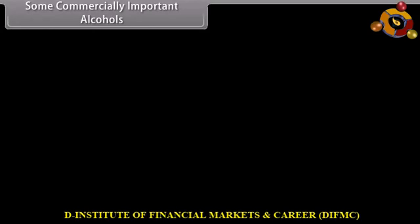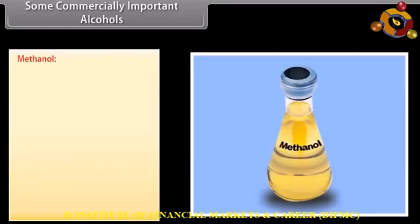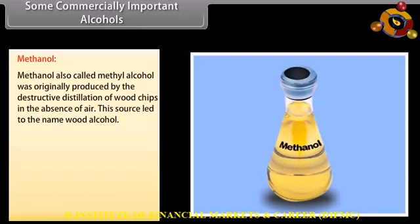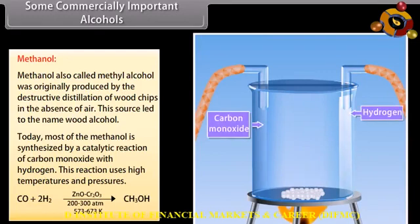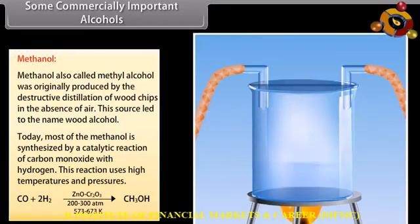Some commercially important alcohols — Methanol: methanol, also called methyl alcohol, was originally produced by the destructive distillation of wood chips in the absence of air. This source led to the name wood alcohol. Today, most methanol is synthesized by a catalytic reaction of carbon monoxide with hydrogen, using high temperatures and pressures.